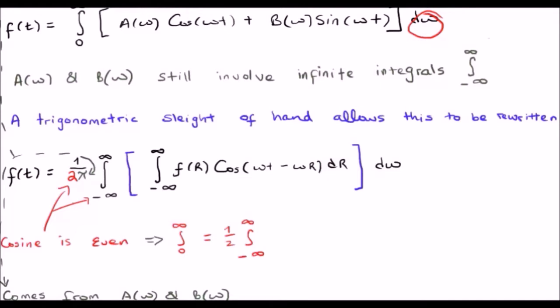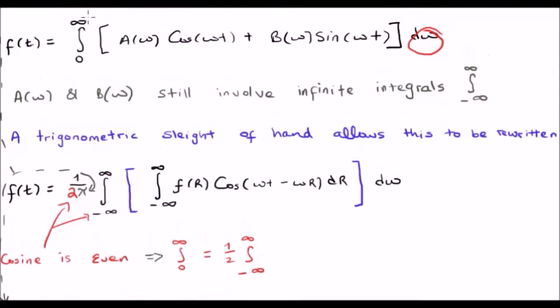Now you might be wondering, where did the scaling term come from? This is the clever part. Instead of integrating zero to infinity, we're now integrating cosine, which is an even function. Because we have an even integral integrating an even function, instead of integrating zero to infinity, we can integrate from minus to positive infinity and just half the answer. That's where the two comes from.